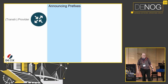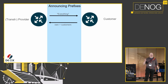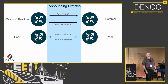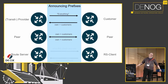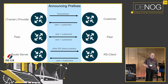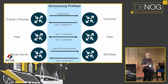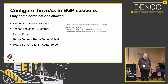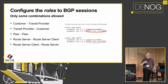You have your BGP neighbors. You have transit providers, they have customers. Your transit providers announce everything to customers. Customers announce their own prefixes and their customers' prefixes to transit providers. You have peers — both announce only their own and their customer prefixes. And being at an internet exchange, you have route servers and route server clients. These roles of neighbors have only certain pairings allowed.